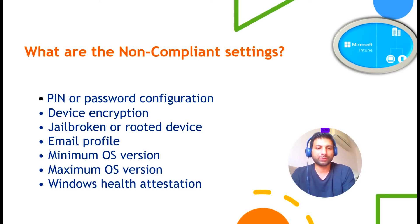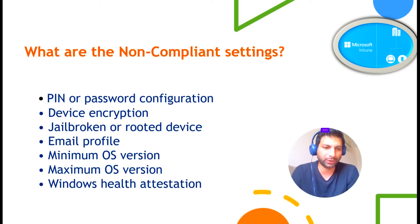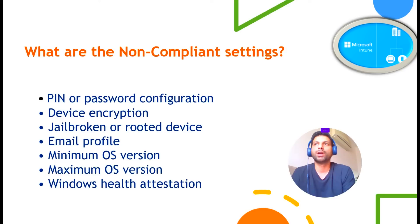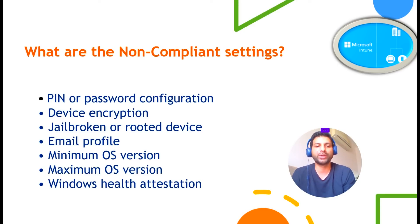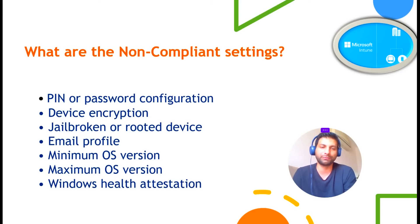The fourth setting is email profile — for example, you should use the official Outlook application to get email access. Minimum and maximum OS version settings allow you to require at least Windows 10, otherwise the device will be marked as non-compliant. You can also set a maximum version like Windows 11 and specify the latest build number. Windows health attestation means the device should be healthy and not affected by malware or viruses; if not, it can be marked as non-compliant.